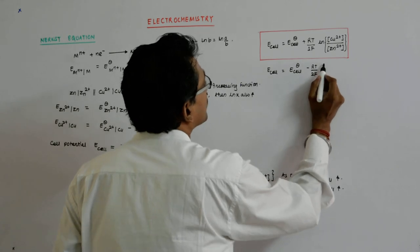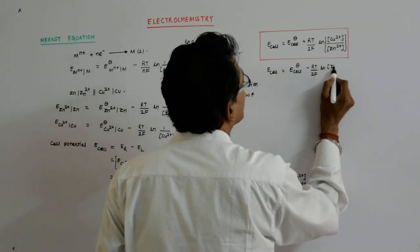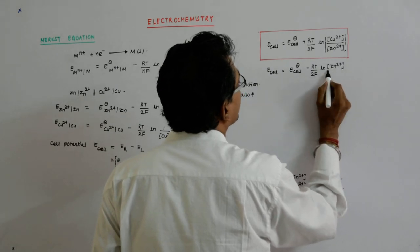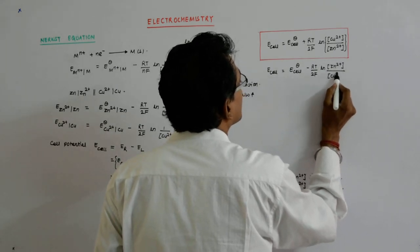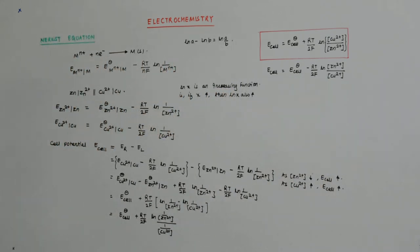If I take the reciprocal, it becomes something like this. Now I can plug in the values of RT and F.